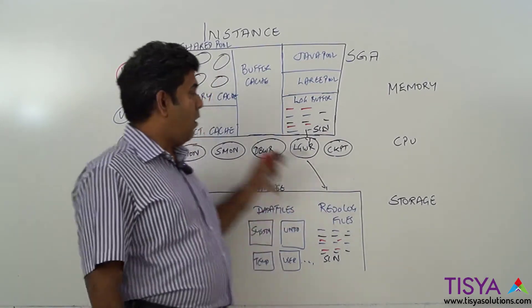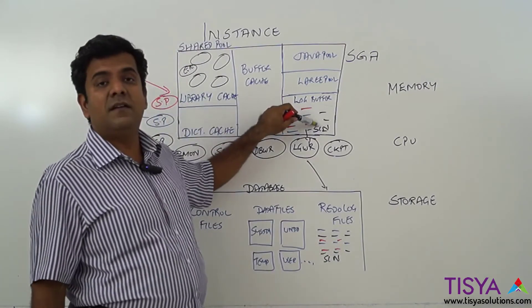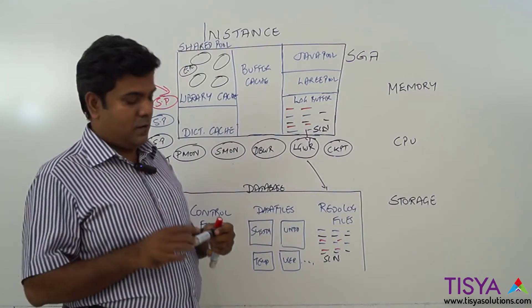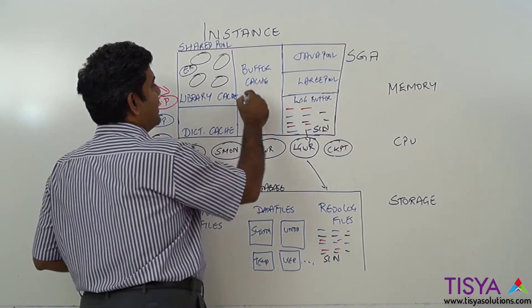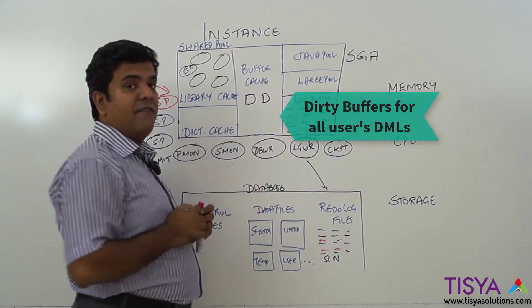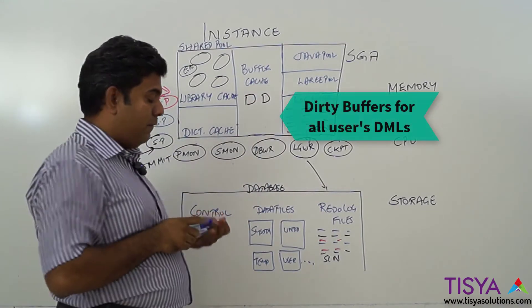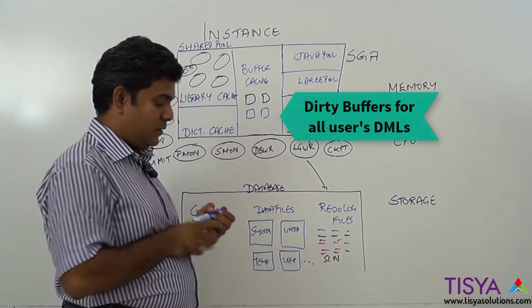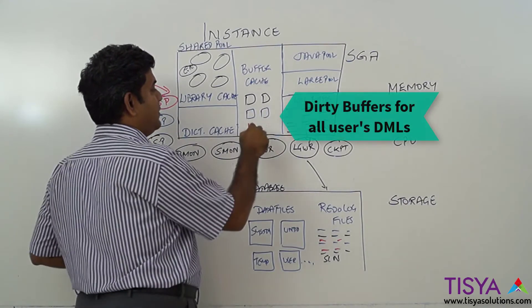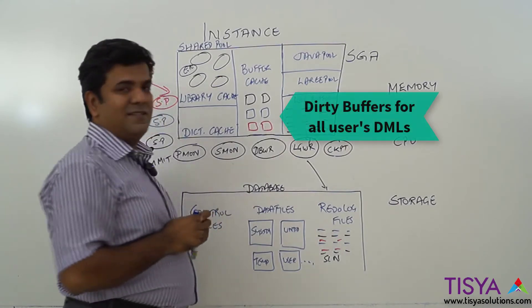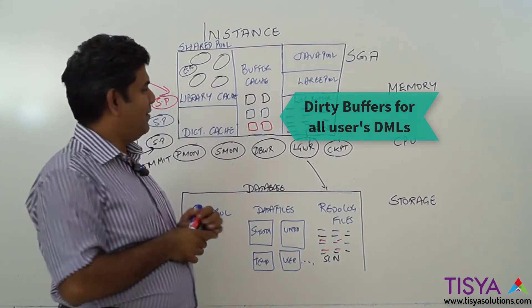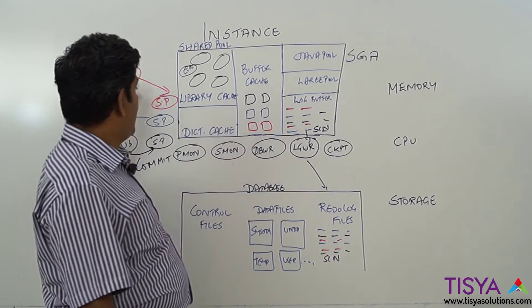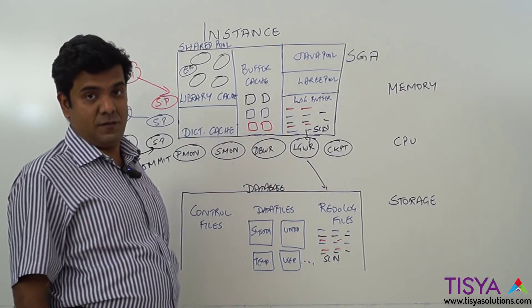The log buffer entries for all users' DMLs are written down. Note that the changes in the buffer cache have happened for all users who have made changes — that is not changed. I'm representing black, blue, and red as the blocks and rows which have been modified by the respective colored users.